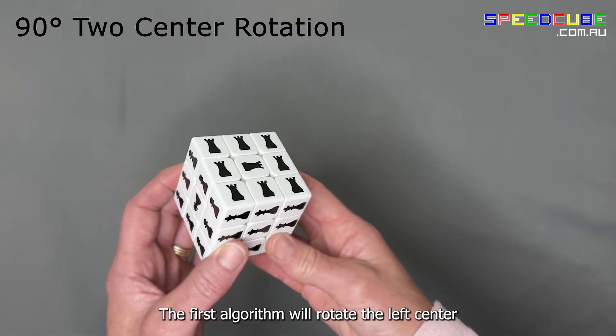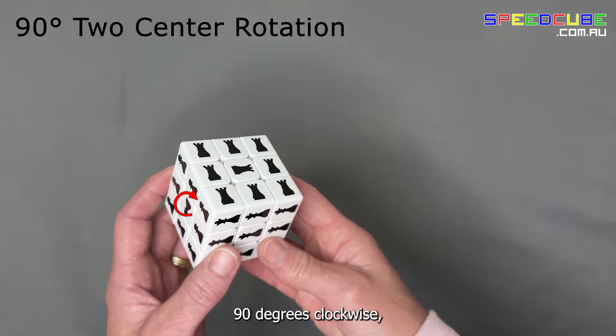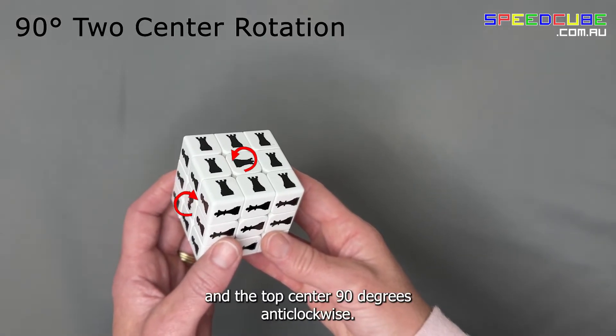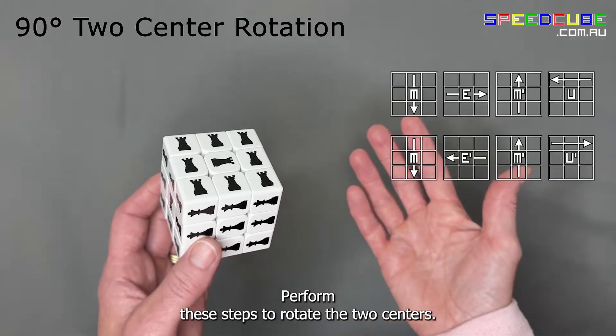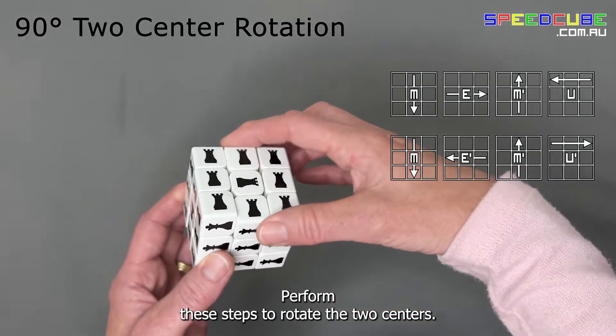The first algorithm will rotate the left center 90 degrees clockwise and the top center 90 degrees anticlockwise. Perform these steps to rotate the two centers.